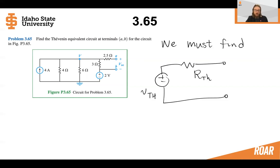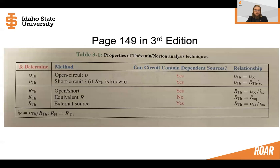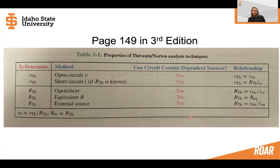First we know that we need to find a Thevenin equivalent, and that Thevenin equivalent is going to look like a circuit with a voltage source and a Thevenin resistance. We don't have any dependent sources, which is good because that's going to simplify things. We have a table that shows Thevenin-Norton analysis techniques, and we can see that some of these techniques work when you have dependent sources and some work when you have independent sources, but not all of them.